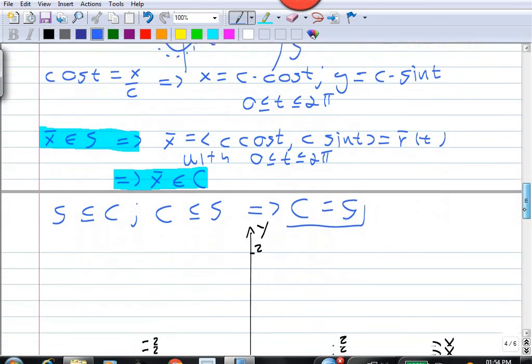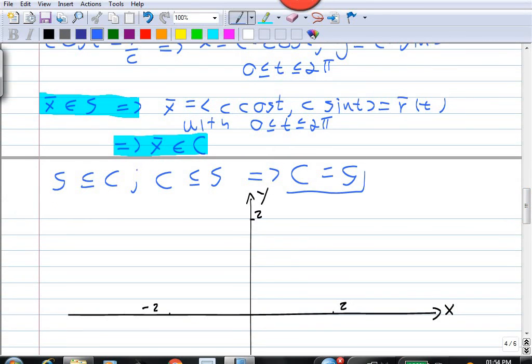parametrized by this vector function r, (c cos t, c sin t) with t between 0 and 2π, this gives you a circle. The center of the circle is at 0, and the radius is equal to c.